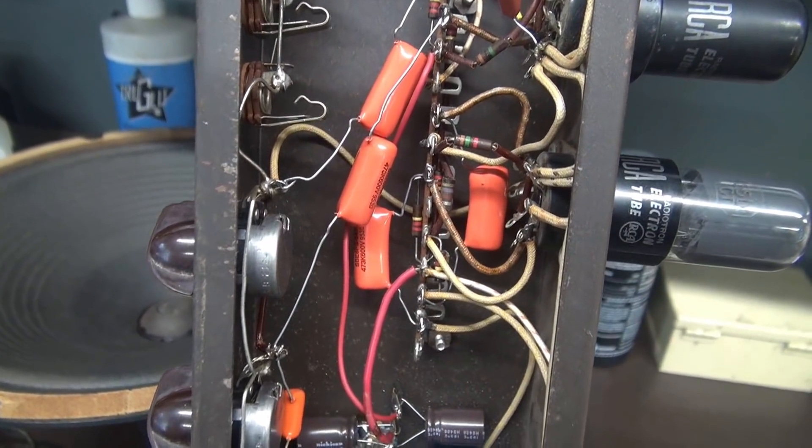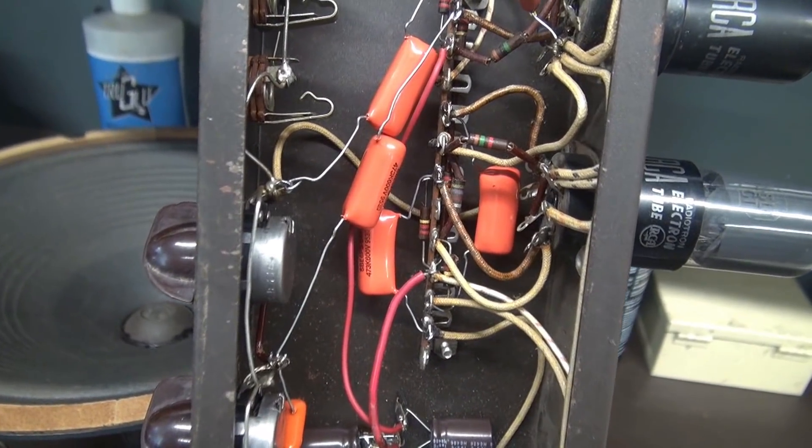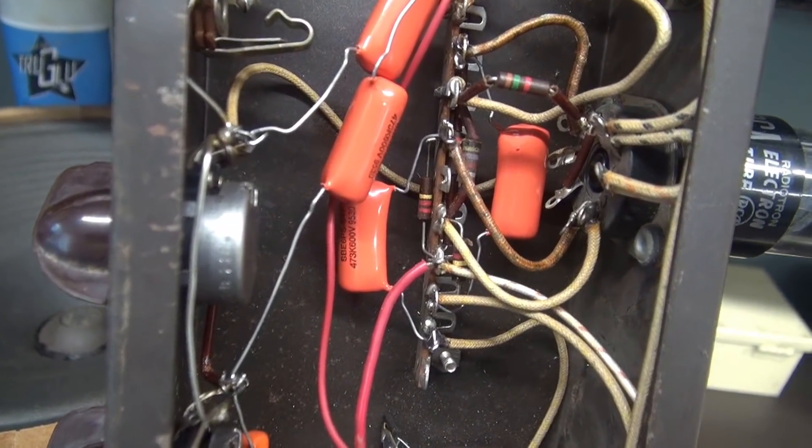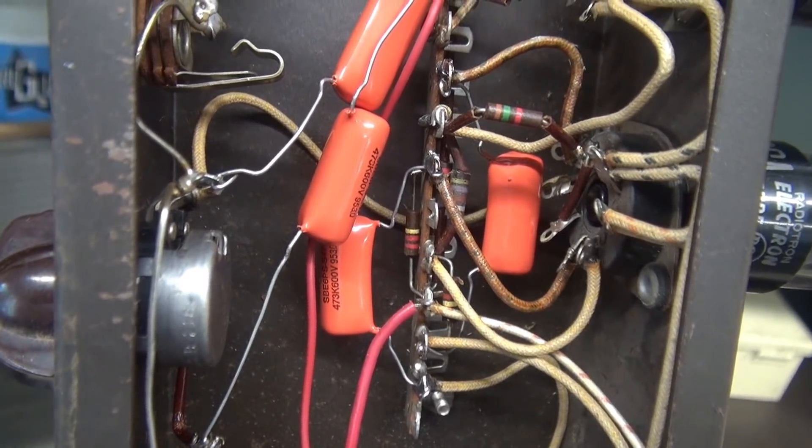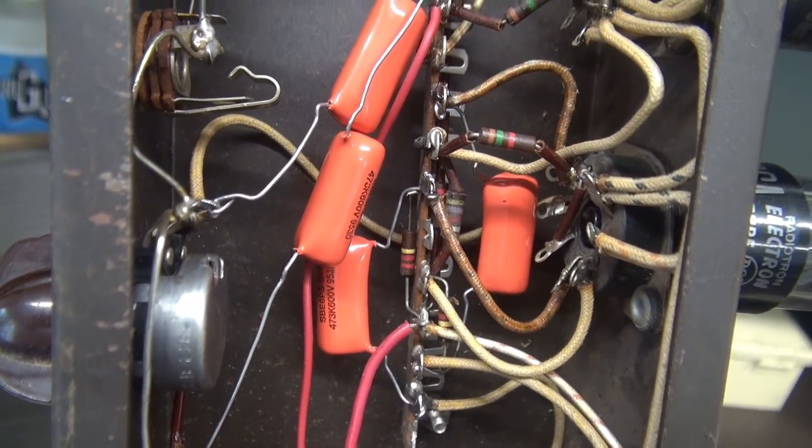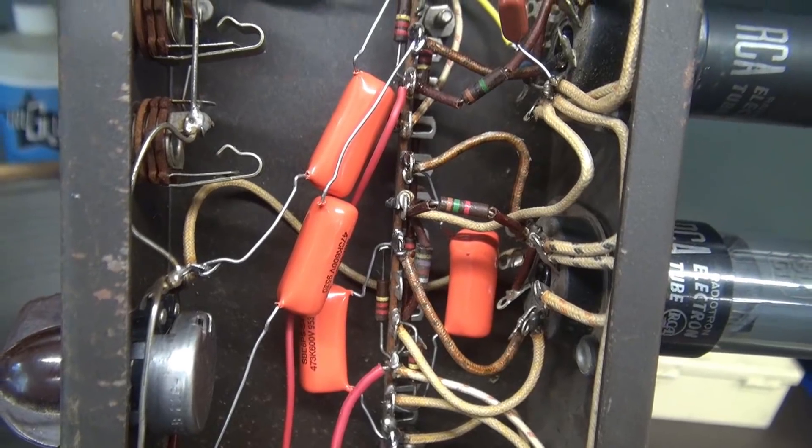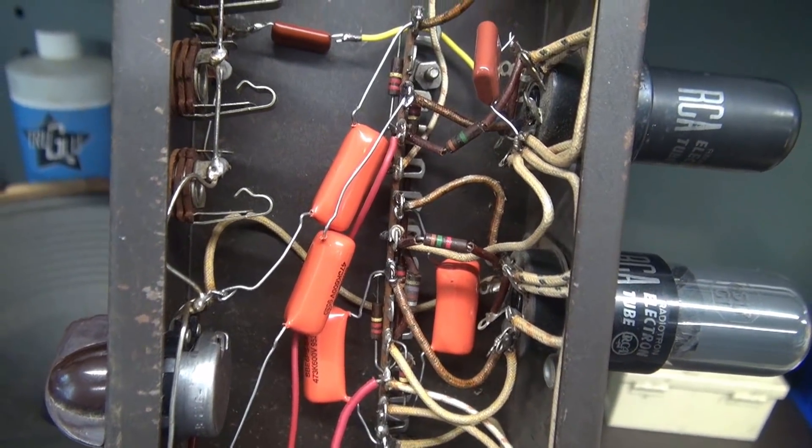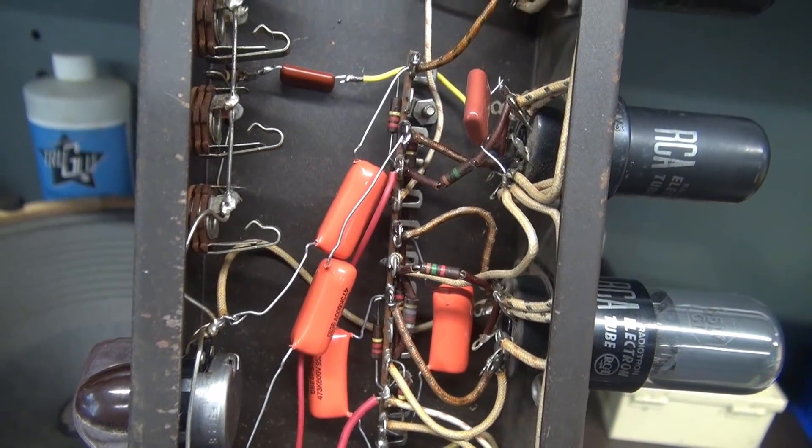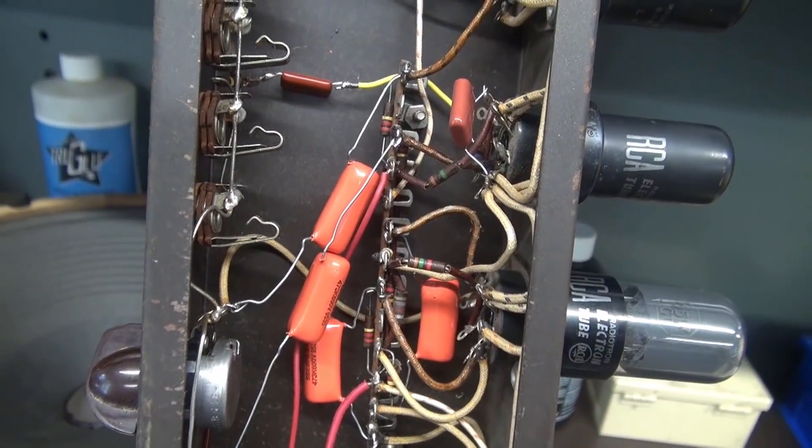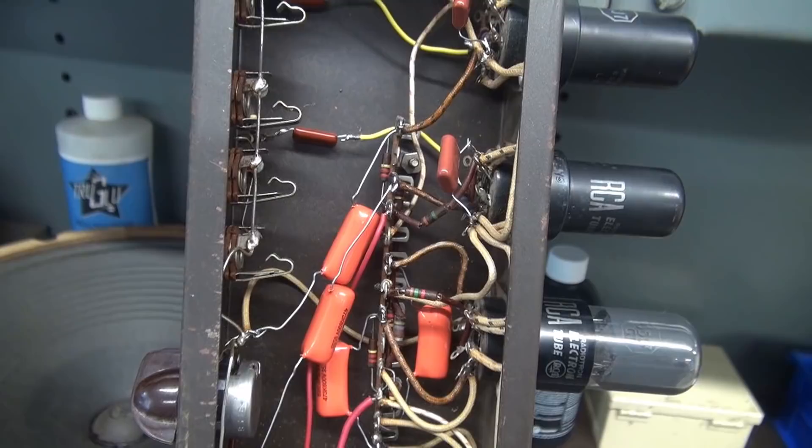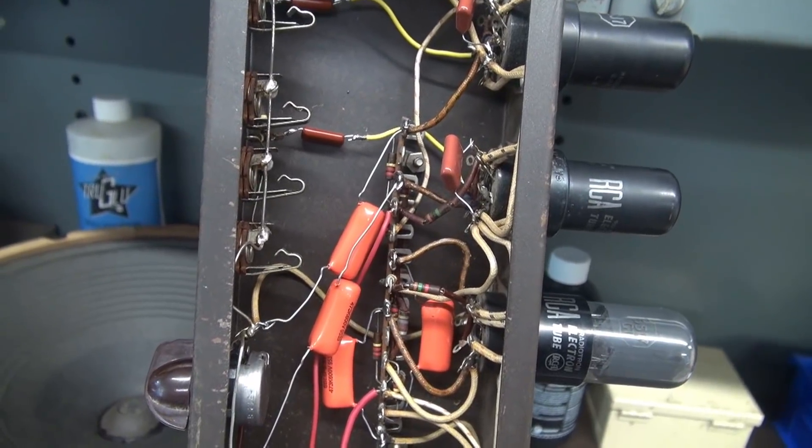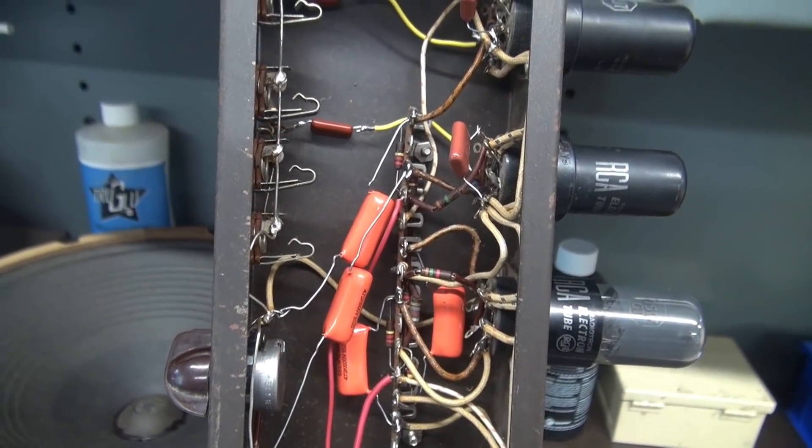I expect that they're going to be way out of tolerance because these are the real old ones that don't even have the tolerance code. You can see there's only three bands, no gold, no silver that follows it. So they're old and they've probably absorbed a lot of moisture and dirt and things from the past that have changed their value. So I'll probably just change them all but we're going to go ahead and check them and see where we're at.